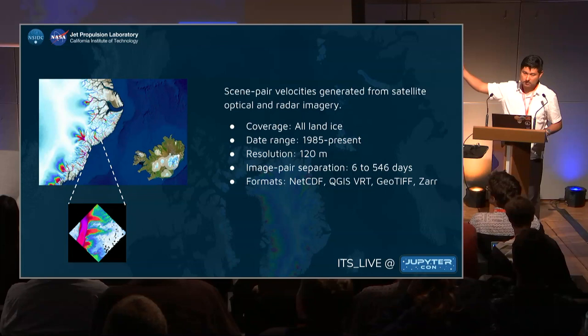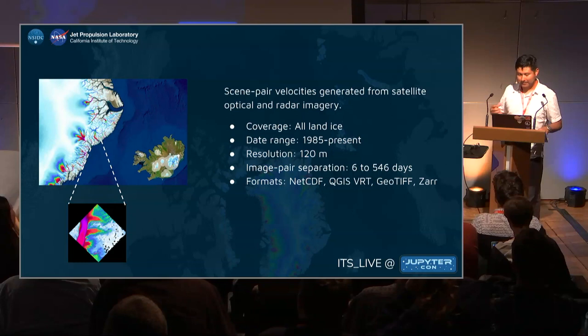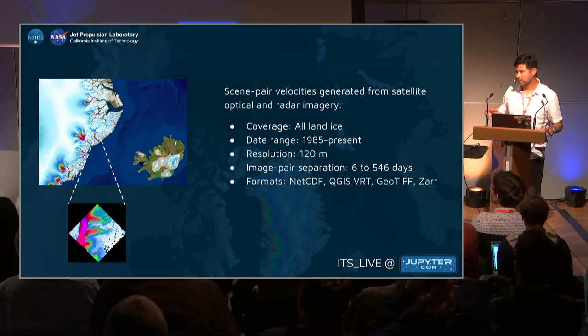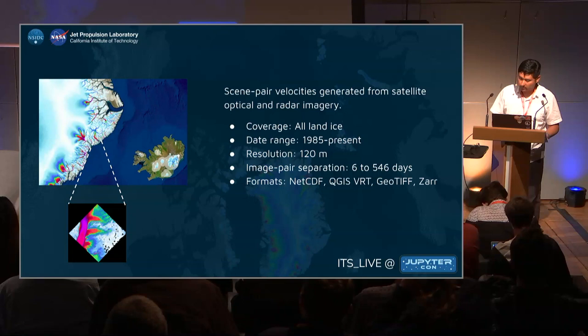Thanks to an algorithm called Autoriff, you can do sub-pixel resolution. The commercial satellites, unfortunately, are not spy satellites with two-meter resolution for obvious reasons — their resolution is 240 and 120 meters. You have to interpolate to get more resolution for these kinds of things. The dataset is produced from 1985 to present and is distributed in many different formats, which is great. Now there is a problem: it's a lot of data.